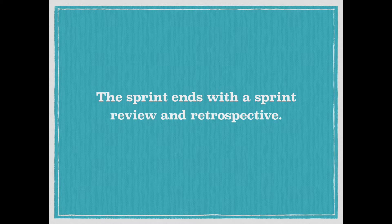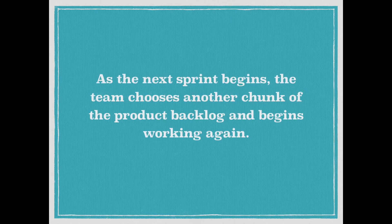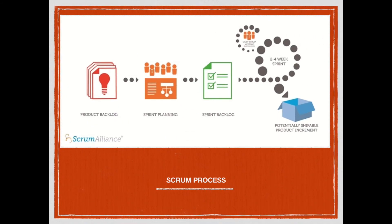The sprint ends with a sprint review and retrospective — how did we do, what's the scoop, what do we need to change? Then there's another sprint. So every few weeks you decide what you'll accomplish, go ahead and do it, and the process repeats. It looks like this: you have a product backlog of things you'd like your product to have, then a planning meeting to decide what in that backlog you can accomplish in this chunk of time — that's the sprint backlog — then daily scrum meetings to track progress. Every two to four weeks, you have some shippable or at least demo-able product increment.